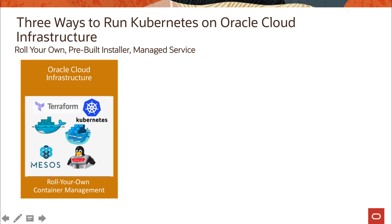What are some of the ways you can launch a Kubernetes cluster on OCI? The first is a DIY model where, like any other cloud provider, you use the core infrastructure components of Oracle Cloud Infrastructure — compute, networking, and storage — and then install your own container runtime, which can be Docker or any other container runtime, and on top of it install your own orchestration system such as Docker Swarm, Kubernetes, or Mesos.